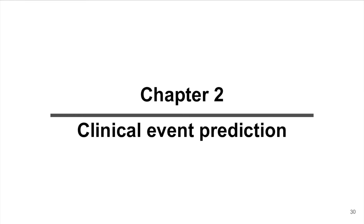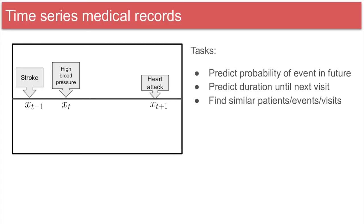This section will cover clinical event prediction using multilayer perceptrons and recurrent neural networks. One clinical prediction use case is, given some previous events, predict what events will occur in the future.